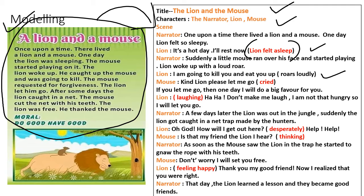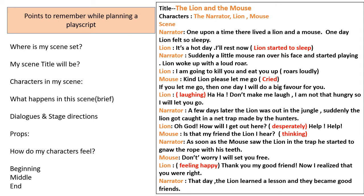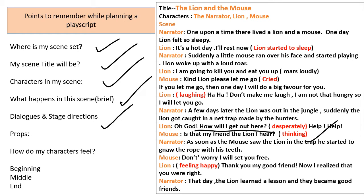Don't forget to recall all the features such as title, character, and the dialogue between the characters, as well as the stage direction. You can find all the features here. Now, here are the points to remember while planning a play script. Before you prepare a play script, keep all these points in mind: Where is the scene set? What's the scene title? Who are the characters? What happens in the scene? Dialogues and stage direction. Props — what are the props used? For example, net. How do my characters feel? That is stage direction — desperately, feeling happy, thinking. And the beginning, middle, and end. Keep all these features in mind and then prepare a play script.